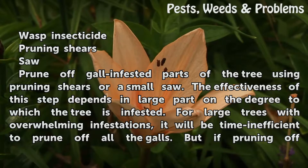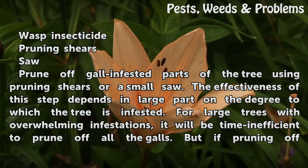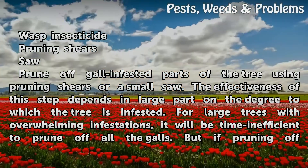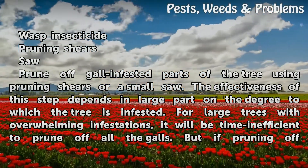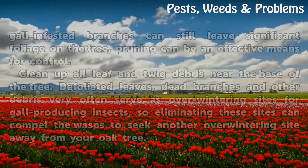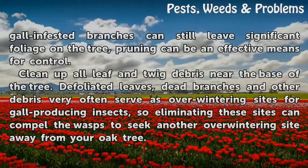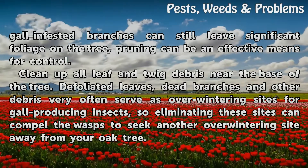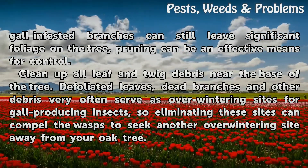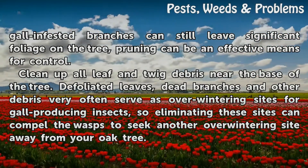Prune off gall-infested parts of the tree using pruning shears or a small saw. The effectiveness of this step depends in large part on the degree to which the tree is infested. For large trees with overwhelming infestations, it will be time inefficient to prune off all the galls. But if pruning off gall-infested branches can still leave significant foliage on the tree, pruning can be an effective means for control.